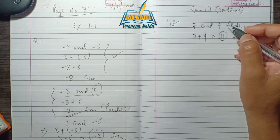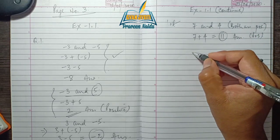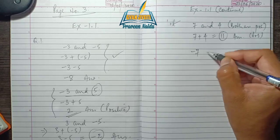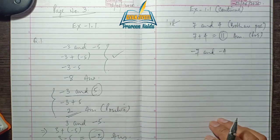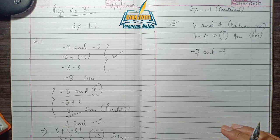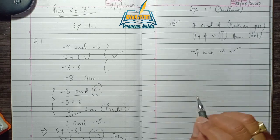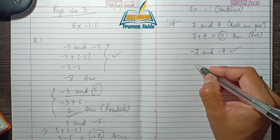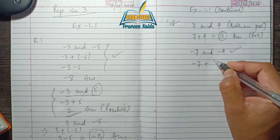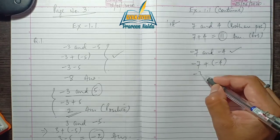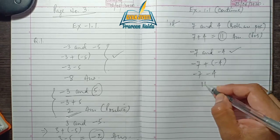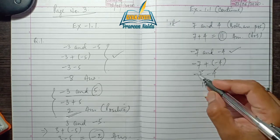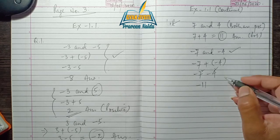Secondly, if both the integers are negative — let us take minus 7 and minus 4. Since both the integers have like signs, that means both are negative, so again you just add the integers. Since the signs are alike, the sum is 11, and both integers having the same sign, therefore the sign of the sum is negative.